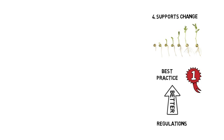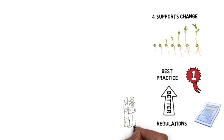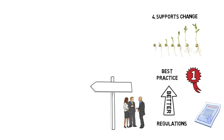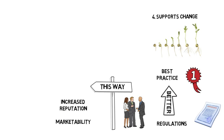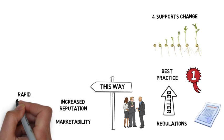Principle four is that BREAM supports a process of change by recognizing and rewarding best practice that go beyond building regulations and issue certificates as proof of compliance. It provides a framework for governments and organisations to set direction, lead and reward progress, leading to real change as well as increased reputation and marketability for those organisations. It also provides a framework for creating rapid change and innovation.